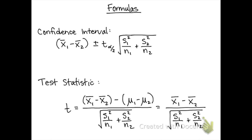So the test statistic formula can be reduced down to x̄₁ minus x̄₂ in the numerator, and then we'll divide that by the square root of the first sample standard deviation squared divided by n₁ plus s₂ squared divided by n₂.